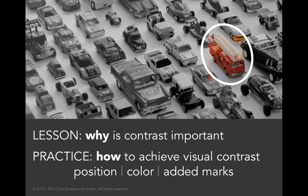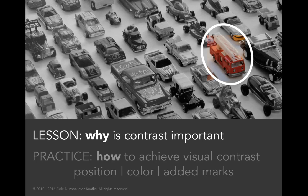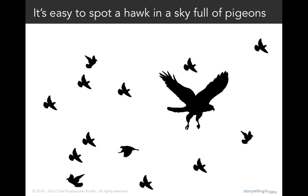First, I'll briefly emphasize why contrast is important, and then I'll spend most of our time looking at four different examples to illustrate how we can achieve visual contrast by employing three specific strategies: position, color, and added marks. So let's jump in and talk a little more about why visual contrast is important.